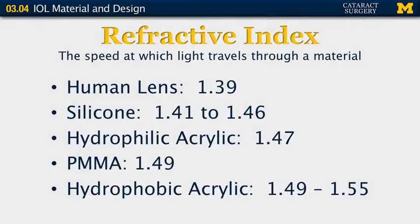Let me speak briefly about some of the different properties of lens implants. First, let's consider the refractive index — the speed at which light travels through a material. The human lens has a refractive index of 1.39. Silicone is a material that most closely mimics the human lens. Hydrophilic acrylic, PMMA, and hydrophobic acrylic have greater refractive indices than does silicone and the human lens.